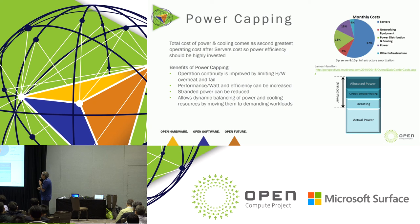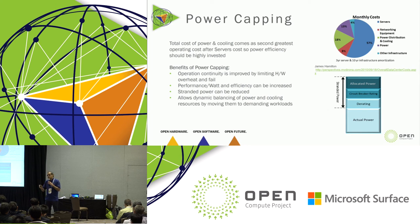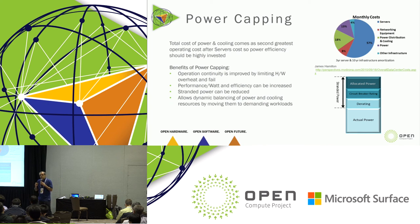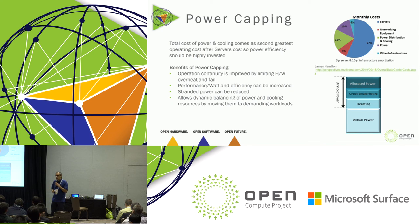Not all workload peaks happen at the same time. Studies show there is workload variation — maybe one server has peak workload for a short period of time, and that performance peak then moves to the next server. By leveraging power capping, we can dynamically balance cooling and power resources and move or share power where it's most needed. We can monitor which workload is critical or highly in demand, serve those servers, and ensure we get the best performance and power utilization.